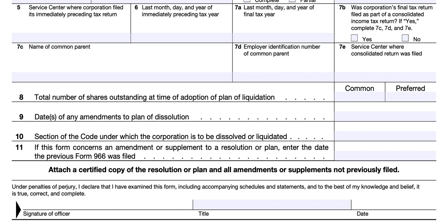That wraps up our review of IRS Form 966, this simple one-page document. If you'd like more instruction on how to complete this form, go to our website, teachmepersonalfinance.com, and enter IRS Form 966 in the search bar. If you like these videos, please subscribe to our YouTube channel. If you like our articles, please subscribe to our newsletter on our website. If you have any questions or comments, please post them in the comments box.